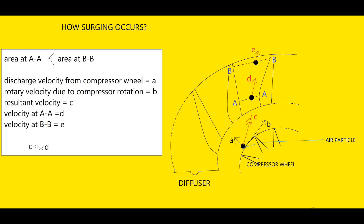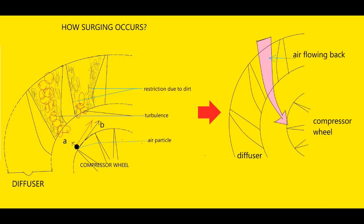Diffuser vanes are matched to the air direction at position AA. The velocity of air is D, which is almost equal to C. Area increases through the diffuser vanes, and at BB, due to the increased area, velocity decreases to E, converting kinetic energy into pressure energy. If there is a restriction in airflow, velocity A will be reduced while rotary velocity remains the same. The direction of resultant C changes, and also D — now the air direction does not match the diffuser vanes, causing turbulence. The effective area through the diffuser will not increase as before, less energy conversion occurs, and at a certain point the pressure built up in the air manifold will blow back through the compressor, causing surging in turbocharger revolutions with noise and vibration.